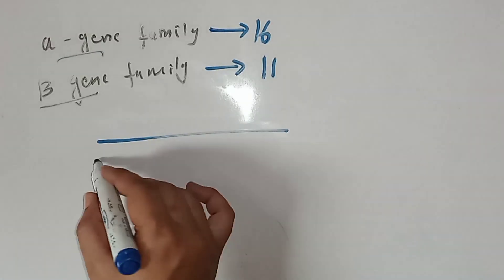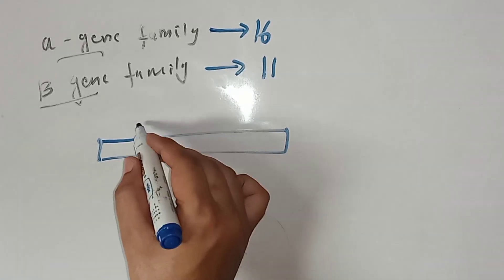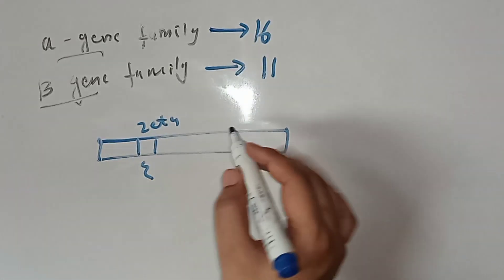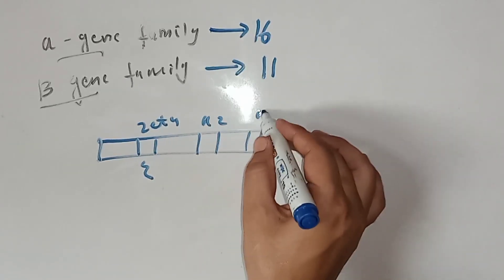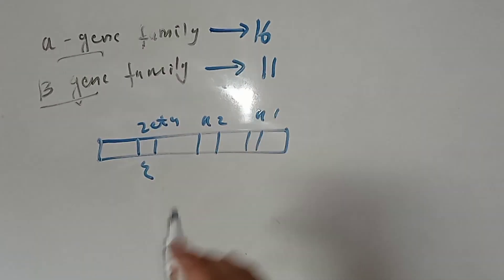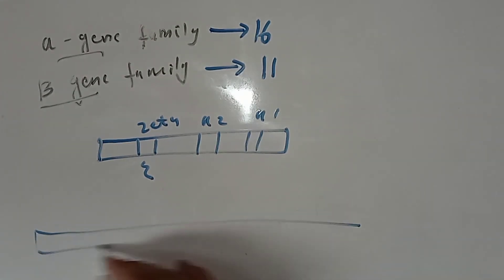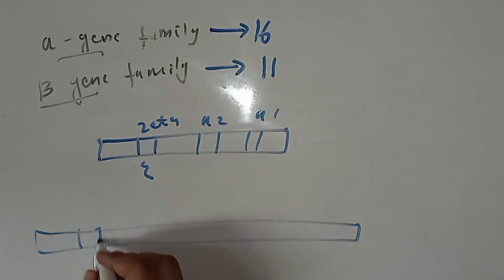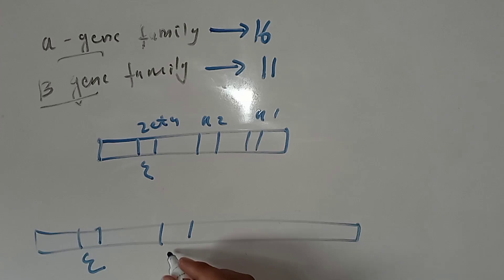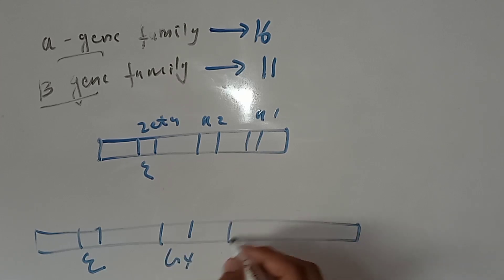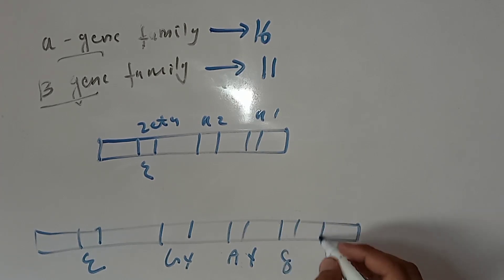On chromosome number 16, the genes located are the zeta gene, then alpha 2 gene, and then alpha 1 gene. On chromosome number 11, the genes located are the epsilon gene, then two gamma genes — G-gamma and A-gamma — then the delta gene, and then the beta gene.